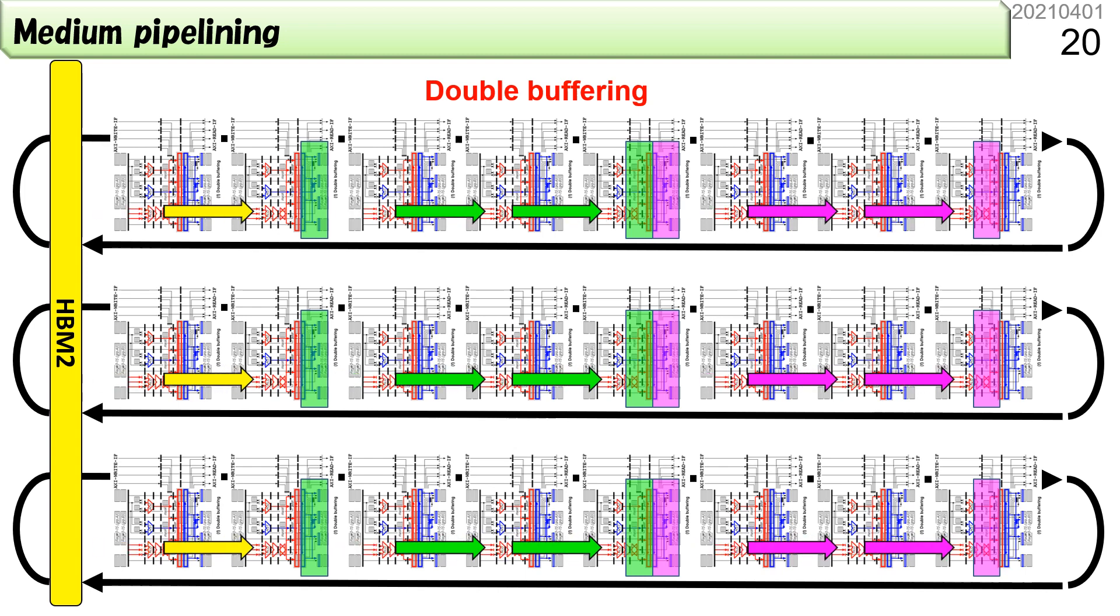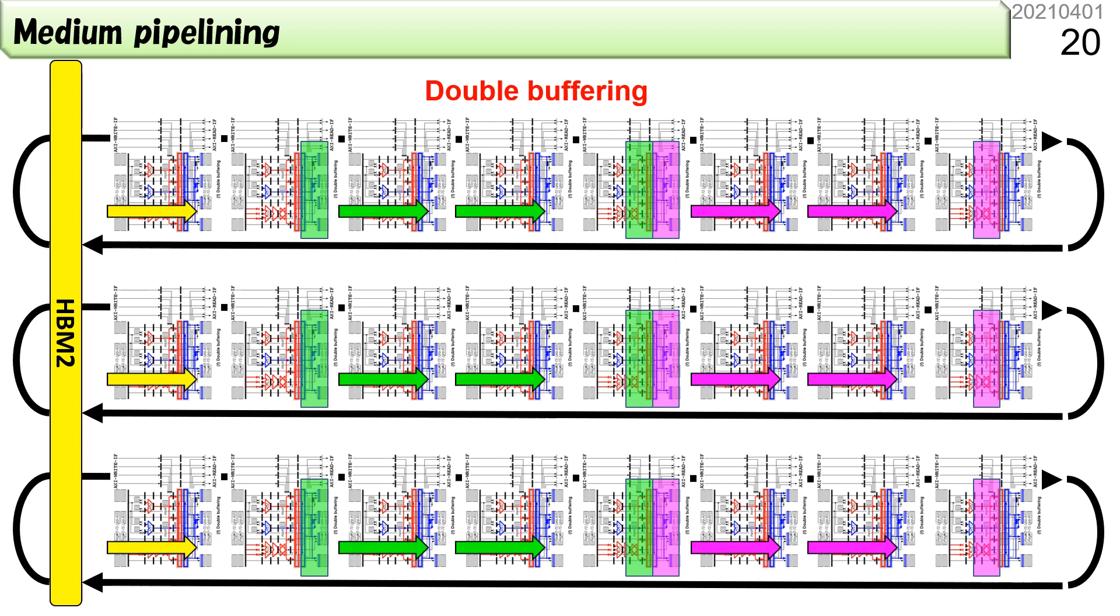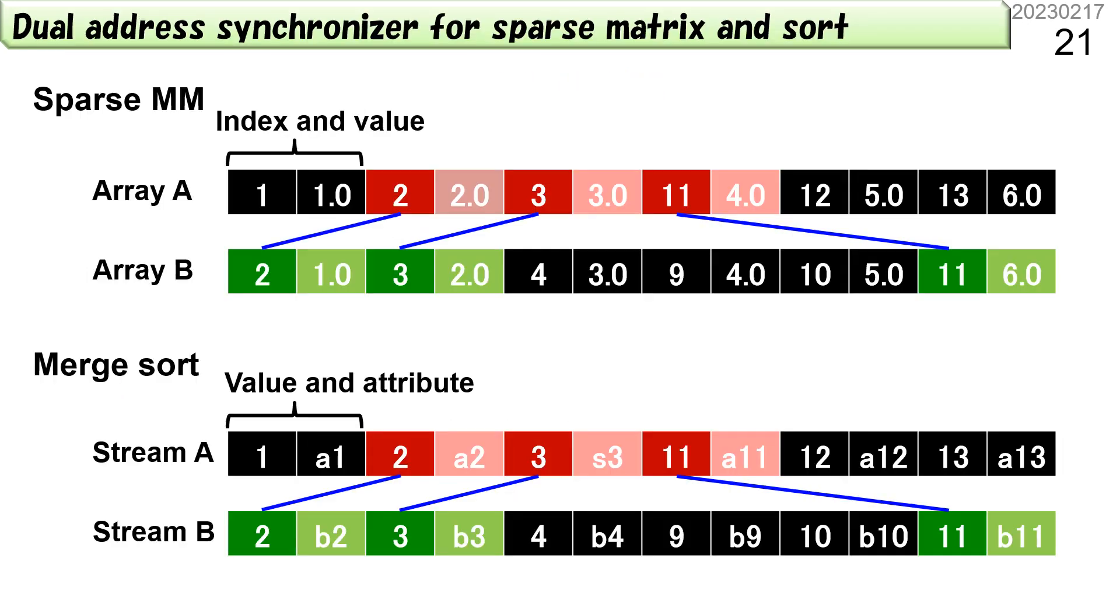In addition to micro-pipelining in IMAX2, medium pipelining is available in IMAX3. The double buffering in local memory can isolate the stages in sorting, hash, and FFT. Modern AI applications employ sparse matrix and sorting.